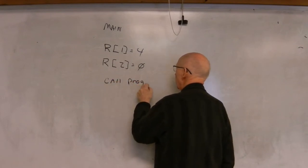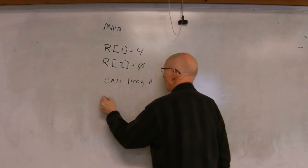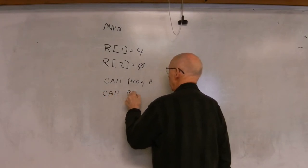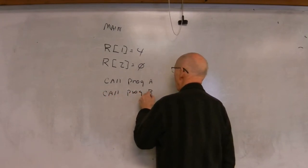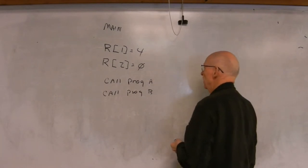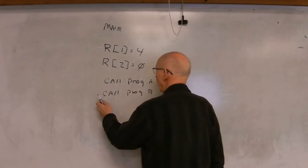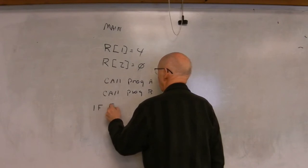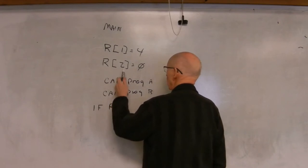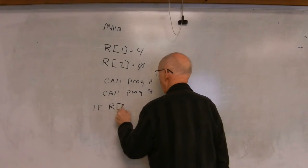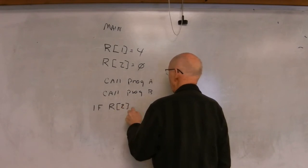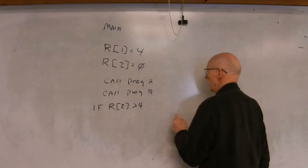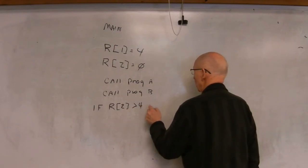So then let's say you had a couple programs you wanted to call: call program A, call program B. And then you could have a condition here that says if register—and register two is the one we're going to test—let's say it's greater than four, then you want to jump label.